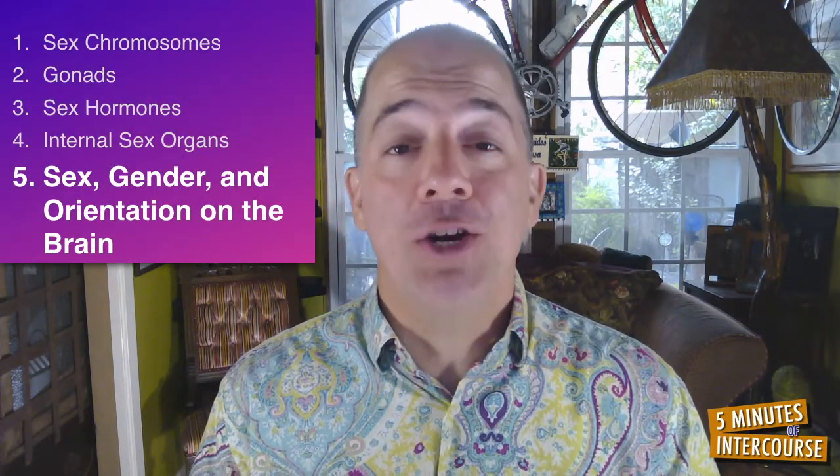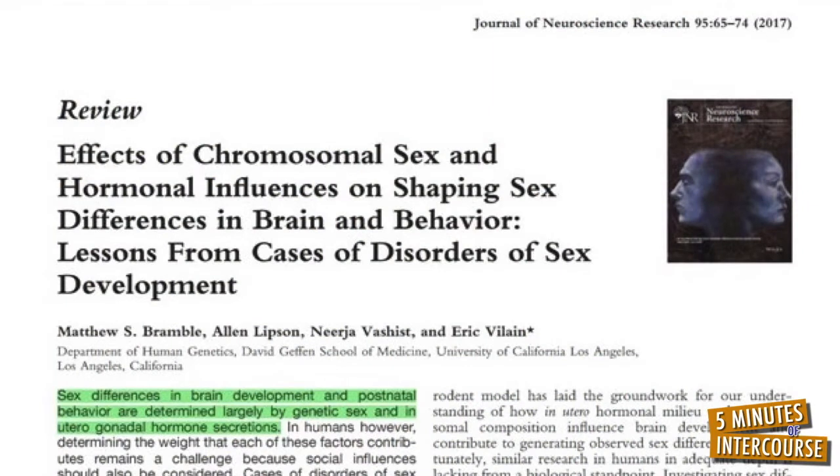Ingredient number five: sex, gender, and orientation on the brain. From about the 13th to the 20th week after conception, estrogen, progesterone, and testosterone are having the greatest prenatal organizational effects on the brain relative to future emotions, behaviors, and thoughts related to sex, gender identity, and sexual orientation. So what sex, gender, and orientation is your brain? Are you sure?